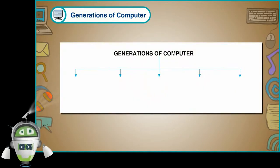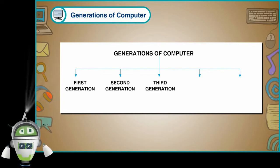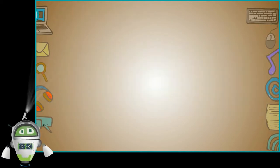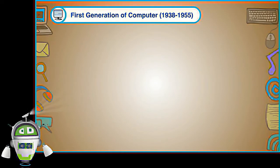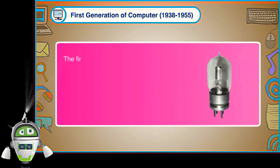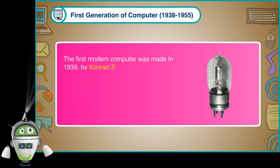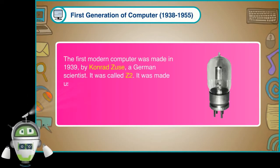First Generation of Computer 1938-1955. The first modern computer was made in 1939 by Conrad Zuse, a German scientist. It was called Z2. It was made using vacuum tubes.